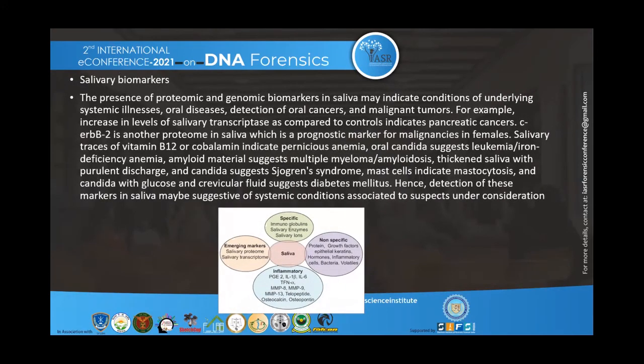There are many salivary biomarkers, including prostaglandins, interleukins (IL-6, alpha, beta), TNF, and MMPs, which are inflammatory biomarkers. These can provide details about diseases in the human body such as Sjögren's syndrome, leukemia, vitamin deficiencies, or anemia.